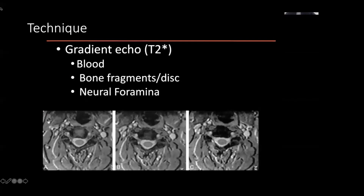Gradient echo and multiple variants exist on many of these themes. You'll see a sequence labeled not as T2 but as FLAIR, or as STIR in the case of the spine. These are T2 sequences adjusted in a certain way — to remove fat or to remove physiologic water — so that the only bright signal you're seeing is from pathologic edema, as opposed to CSF. These are the basic fundamentals of the sequences you will see in everyday practice.